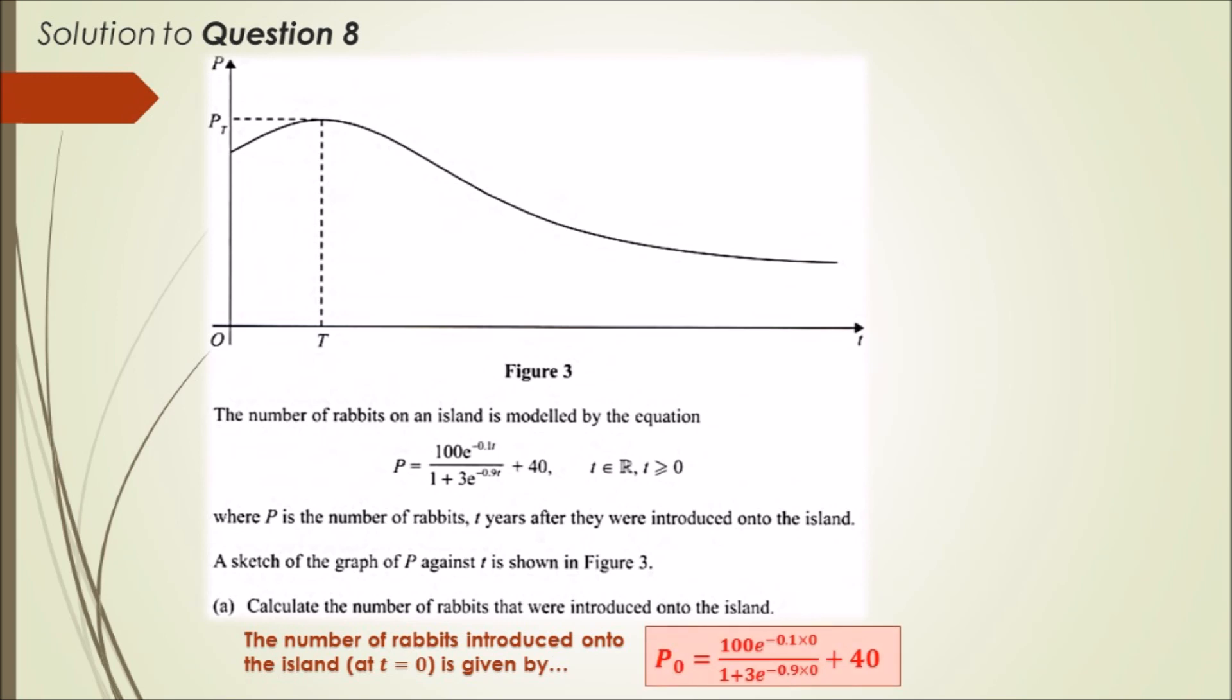When you do that, you should get this. We can call this P₀ representing the population at time zero, and if you pass it through the calculator, you should get 65 rabbits. That's it, literally done. One more question.